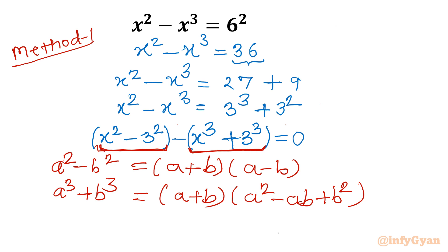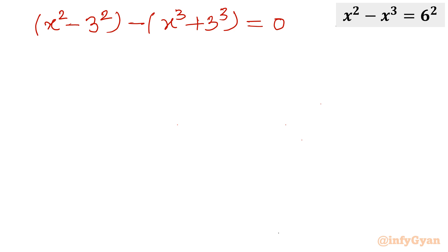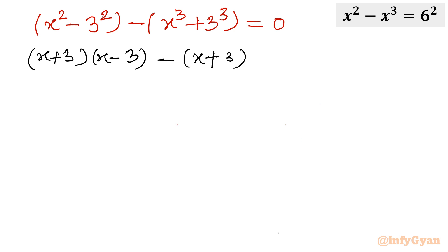Writing the equation out: (x squared minus 3 squared) minus (x cubed plus 3 cubed) equals 0. Applying difference of two squares: (x + 3)(x − 3). Applying sum of two cubes: (x + 3)(x squared − 3x + 9). So the full expression becomes (x + 3)(x − 3) minus (x + 3)(x squared − 3x + 9) equals 0.